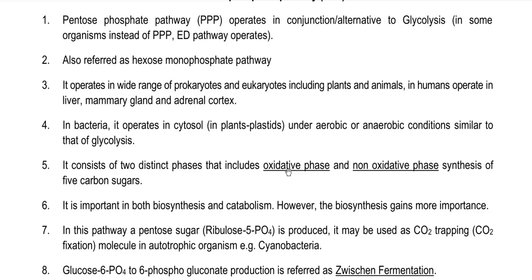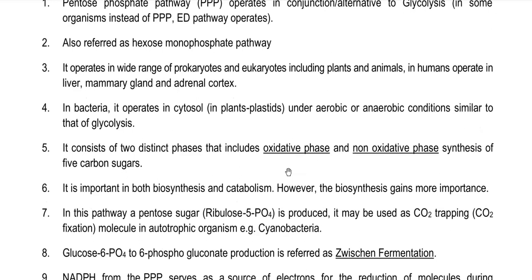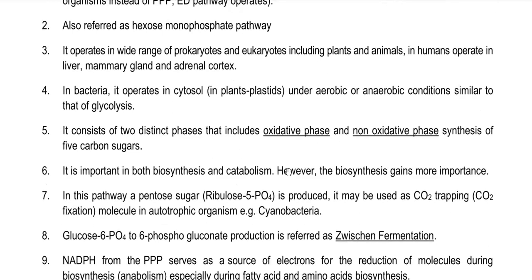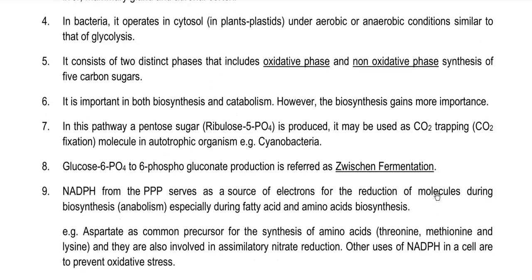The pathway operates in a wide range of prokaryotes and eukaryotes including plants, animals, and humans. It particularly operates in the liver, mammary gland, and adrenal cortex. In bacteria it operates in the cytosol, and in plants it takes place in the plastid region. It can operate under aerobic or anaerobic conditions. It consists of two phases: one oxidative phase and one non-oxidative phase. It is important in both biosynthesis and catabolism; however, biosynthesis gains more importance through this cycle. Through this pathway, pentose sugar especially ribulose 5-phosphate is produced, which can be used for carbon dioxide trapping and carbon fixation in autotrophic organisms such as cyanobacteria.